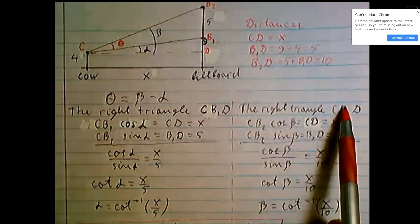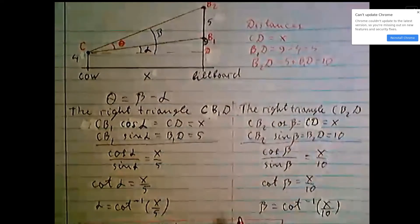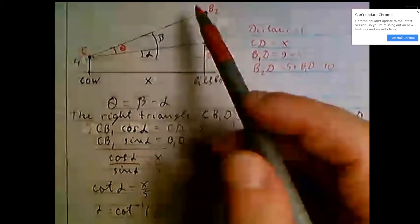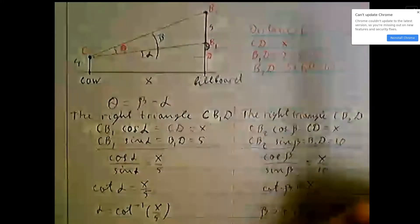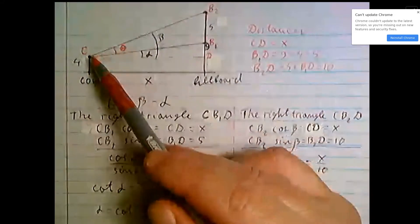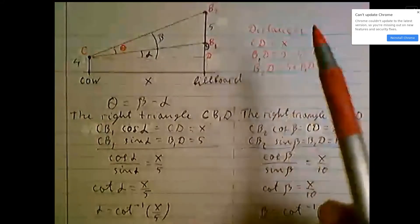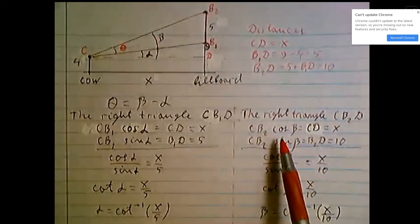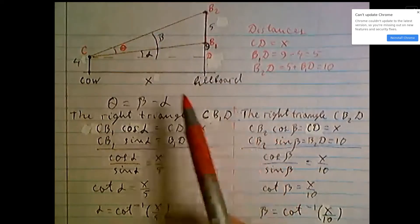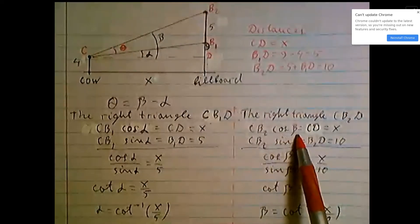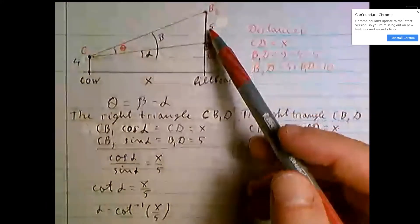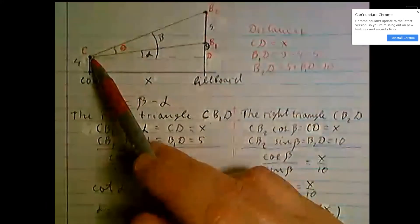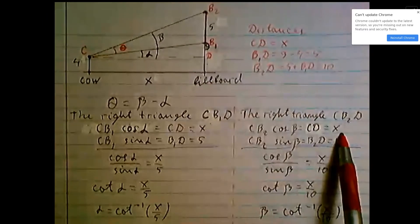Similar, let's discuss right angle CB2D to find angle beta. Similar: hypotenuse CB2 times cosine beta equal leg CD or x.